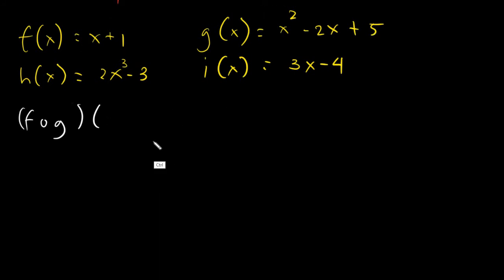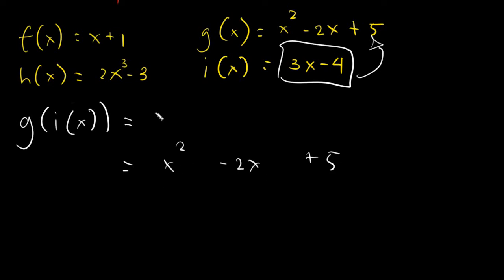Say I have g of i of x. What is inside? i. So meaning I need to put this inside g. So let me write down g. The g is x squared minus 2x plus 5. And according to what I said before, all the values of i will be placed inside all the values of x here. All the x's here will have the value of i. And our i is 3x minus 4. So I will have parenthesis 3x minus 4 squared minus 2 times 3x minus 4 plus 5.